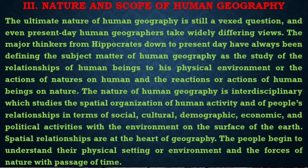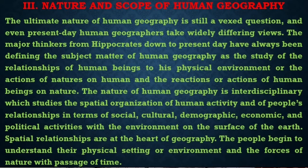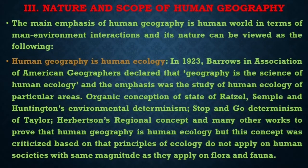The nature of Human Geography is interdisciplinary, which studies spatial organisations of human activity and the people's relationships in terms of social, cultural, demographic, economic, and political activities with the environment on the surface of the earth. The spatial relationships are at the heart of the discipline. People began to understand their physical environment and the forces of nature with the passage of time. The main focus of Human Geography is the human world in terms of human-environment interactions, and its nature can be viewed as follows.